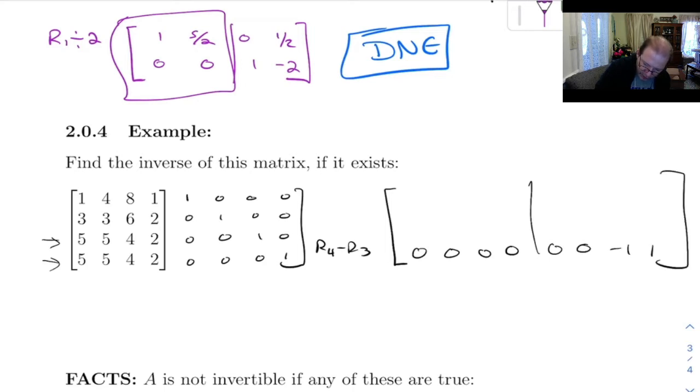As soon as you get all zeros over here, there's no way you can row reduce this and get an identity matrix out of it. So how do I know that? Well remember, when you row reduce something, any all zero rows wind up on the bottom.